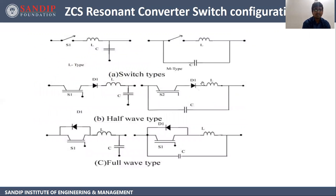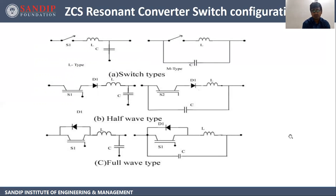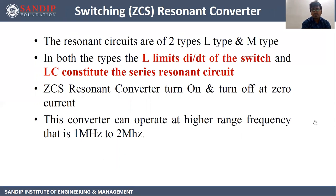Let's start with ZCS resonant converter switch configuration. In each circuit we have used an LC resonant circuit. This LC is used to turn on and off the switch S1 at zero current. We are going with ZCS, that is zero current switching. Resonant circuits are of two types: L type and M type. In both types, the L limits di/dt of the switch and LC constitutes the resonant circuit.